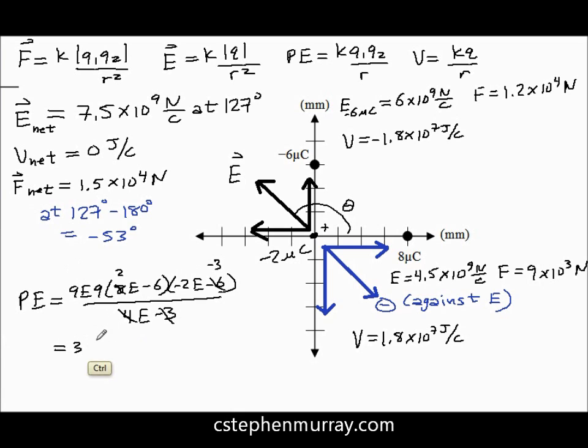Oops, negative 36. There was a negative sign in there. And 9 minus 9 is 10 to the 0, so it's just negative 36 joules.